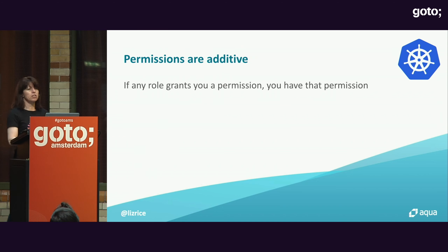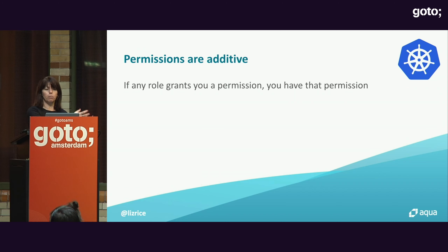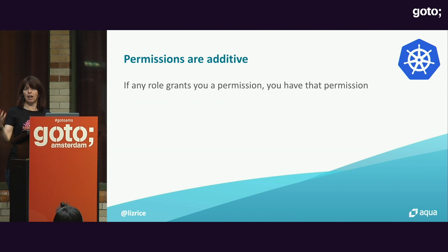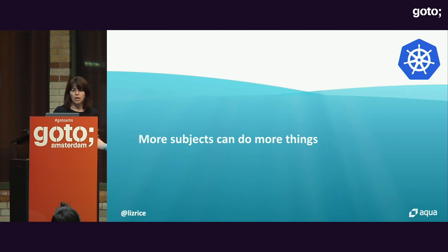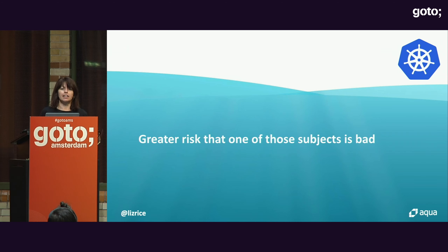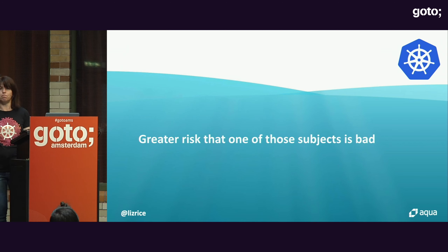The other problem is that permissions are like a whitelist — there's no blacklisting. If any role and role binding combination gives you permission to do something, you have that permission. So with a thousand different roles and role bindings, only one needs to grant access to a particular resource and that subject has that permission — they all add up. Over time, more subjects will be able to do more things, giving a greater likelihood that a malicious or mistaken user could cause harm.